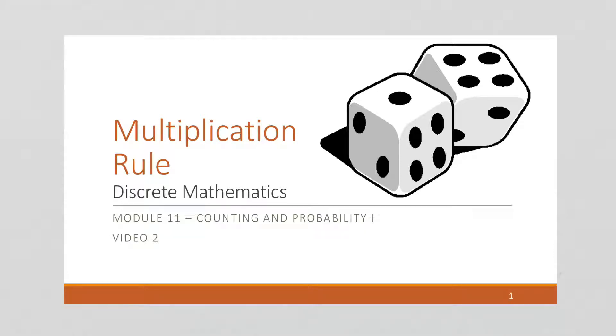In this video, we're going to talk about the multiplication rule in probability. And this is really more of a combinatorial problem. Combinatorics is the science of counting.